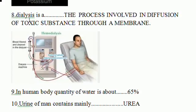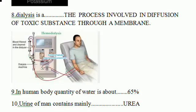The eighth question: dialysis is the process involved in the diffusion of toxic substances through a membrane. This is the dialysis machine — it is used to perform dialysis on human beings.